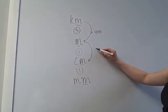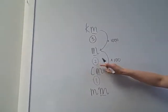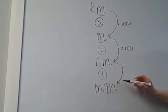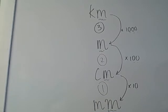And here from metres to centimetres, you multiply by 100, so there's two zeros, that's where the 2 comes in. And for the centimetres to millimetres, you multiply by 10, which is where the 1 comes in.